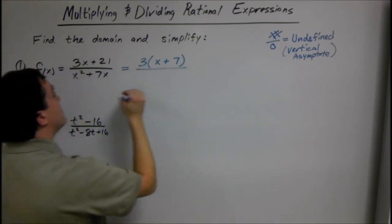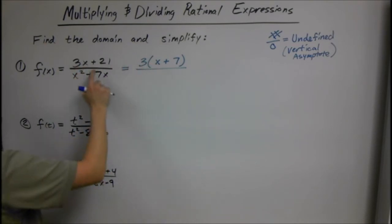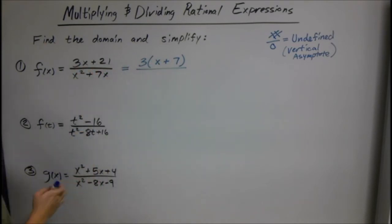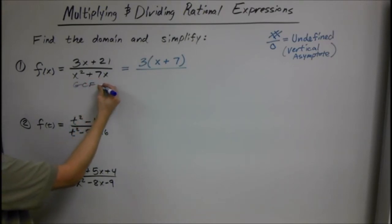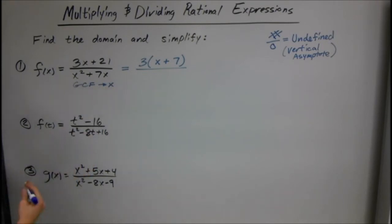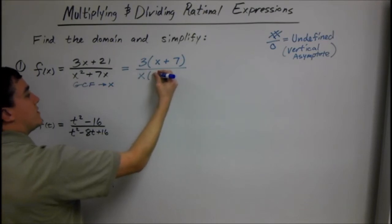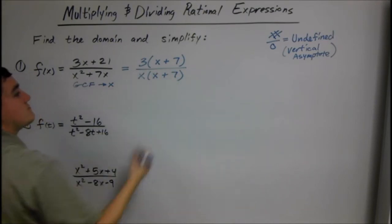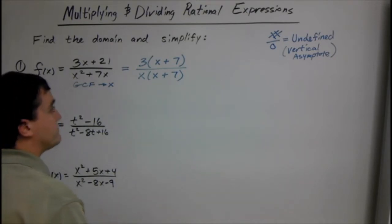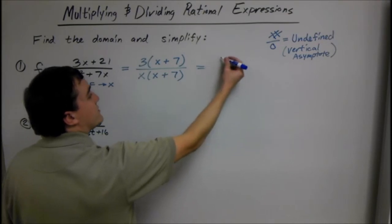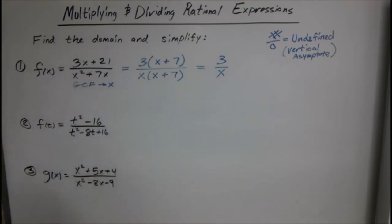That's the opposite of distributing. When you factor, you divide to see what goes inside: 3x divided by 3 leaves us with x, and 21 divided by 3 leaves us with 7. The greatest common factor of the denominator is x, so we take out an x and we have x plus 7 left. We can then cancel those, and we're left with 3 over x — that's the simplified form.